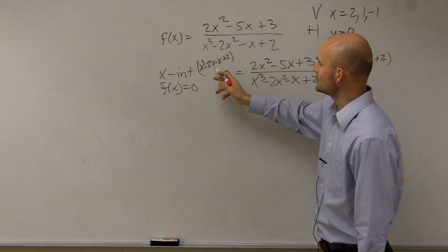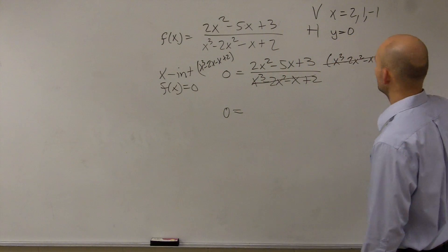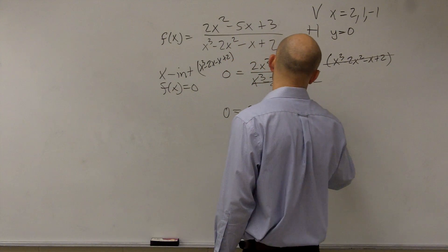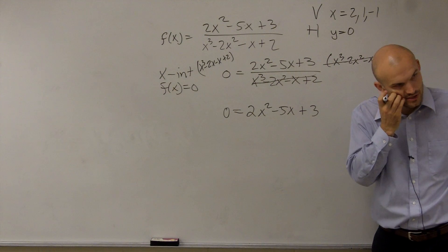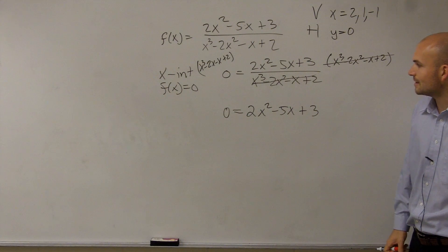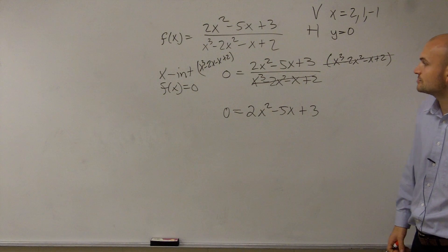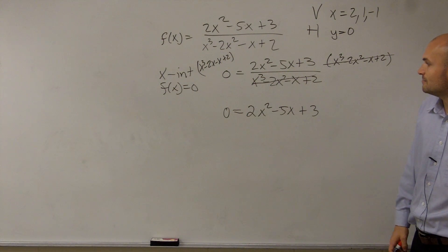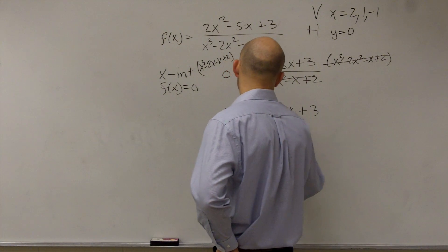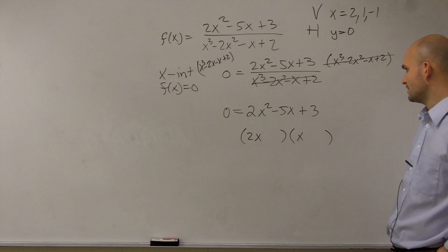This whole expression multiplied by 0 is just going to become 0, and that divided by itself gives you 1. So you're just left with 2x squared minus 5x plus 3 equals 0. Now I've got to factor this. I need to find two terms that multiply to give me 6, so I look at 2x times x, and factors of 3.